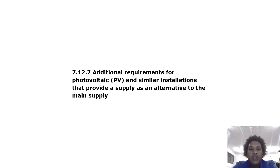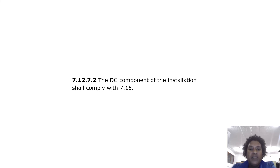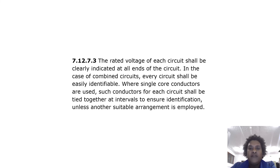Additional requirements for photovoltaic and similar installations providing a supply as an alternative to the main supply: the PV installation shall comply with SANS 60364-7-712, and the solar panel shall comply with SANS 61215 for poly and monocrystalline, or SANS 61646 for thin film. The DC component shall comply with 7.15. The rated voltage of each circuit shall be clearly indicated at all ends of the circuit, and in combined circuits every circuit shall be easily identifiable. Where single core conductors are used, they shall be tied together at intervals to ensure identification.